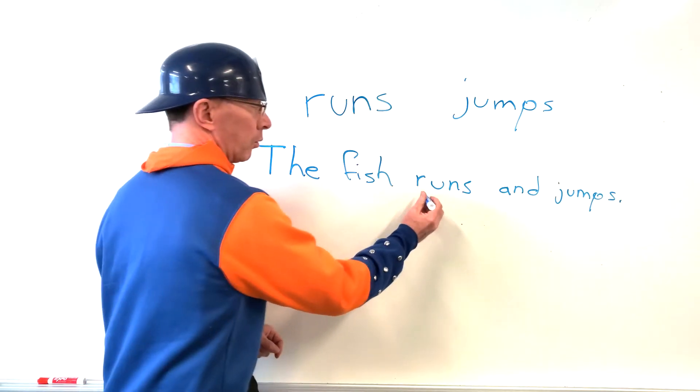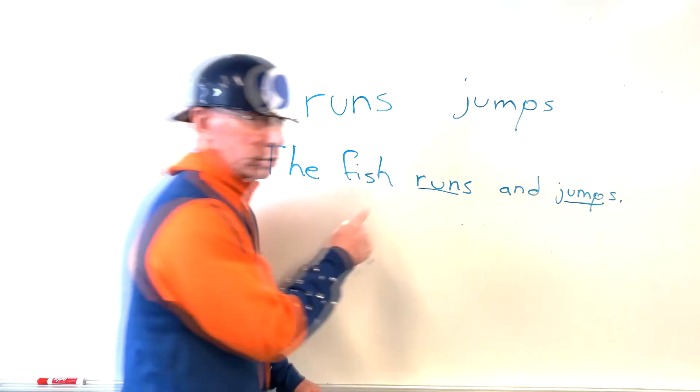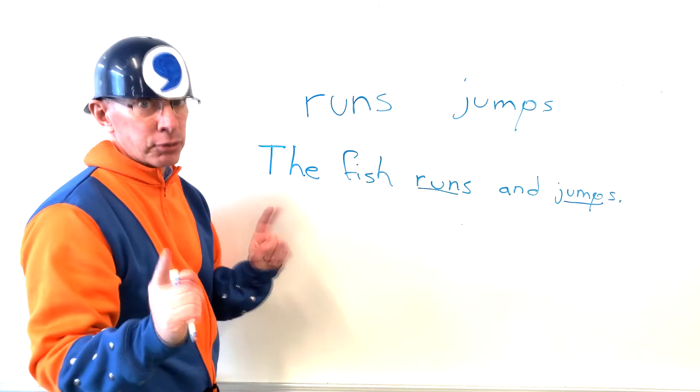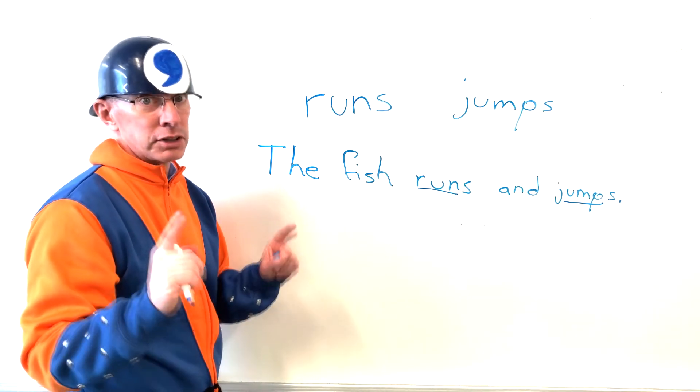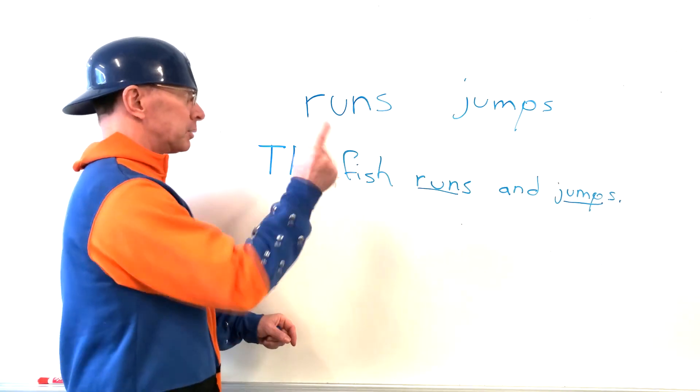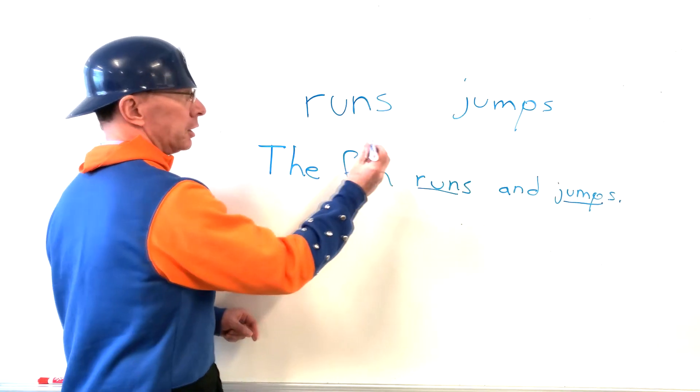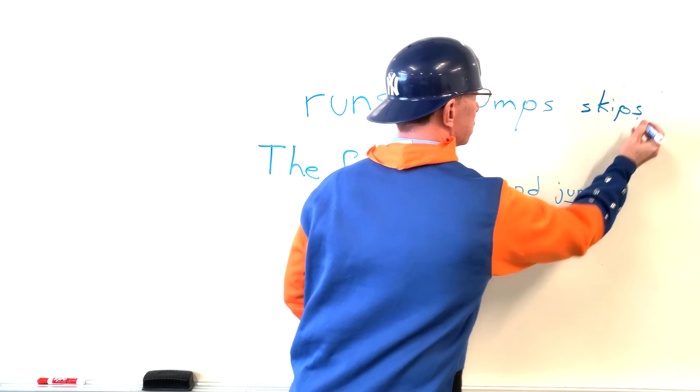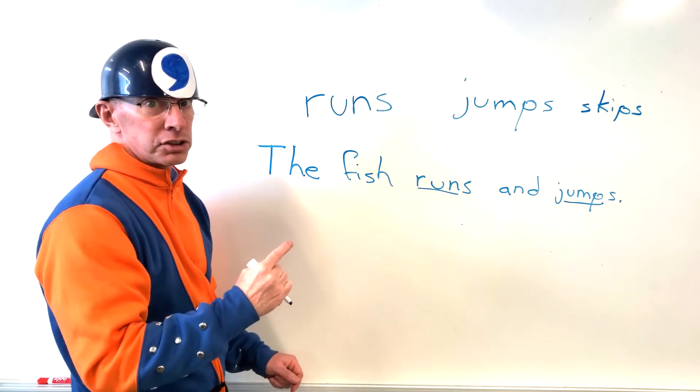Fish runs and jumps. I got two verbs right here. One, two. Uno, dos. I know Spanish. Alright. Now, what if I have three verbs? Remember the rule. I use a comma after three verbs. So let's put runs, jumps, and skips. Alright? Let's redo the sentence.